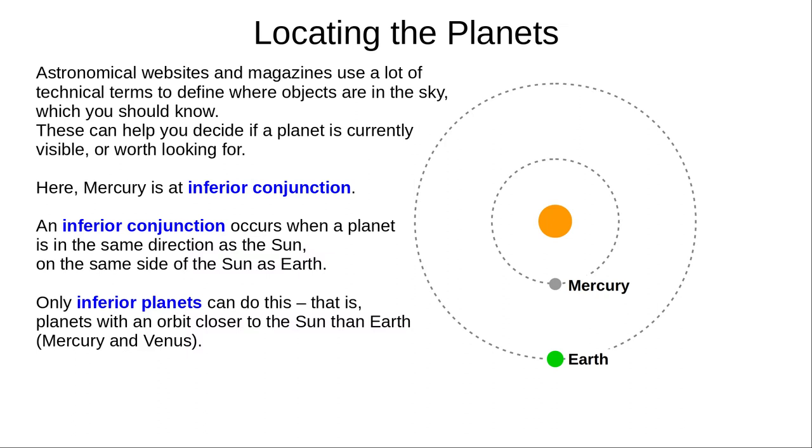Here, we see Mercury at inferior conjunction. It's in the same direction as the Sun, but on our side of the Sun. You can only see Mercury with specialised equipment at this time. Only inferior planets, Mercury and Venus, with orbits closer to the Sun than ours, can be at inferior conjunction.